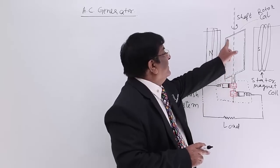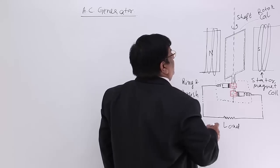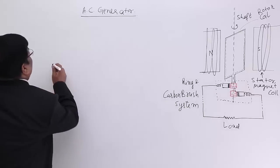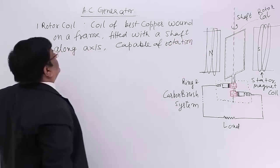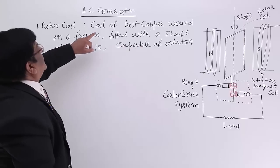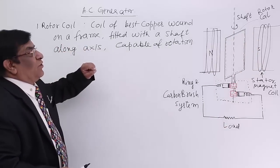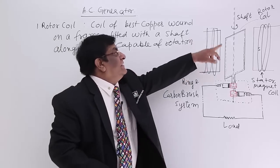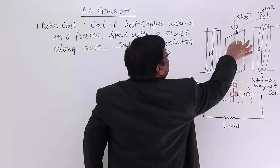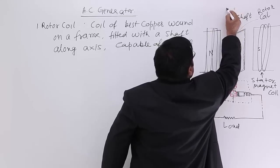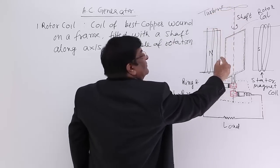On the frame there are a large number of turns and this will rotate. This part we call the rotor. The coil is capable of rotation and is made with the best copper winding, which has minimum resistance. This winding is done on a frame and the coil is fitted with a shaft. When we rotate this shaft with the help of a turbine, the coil will also move.